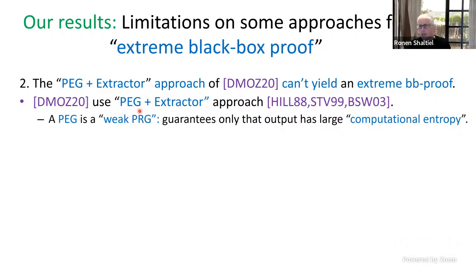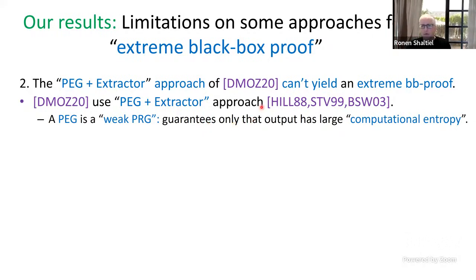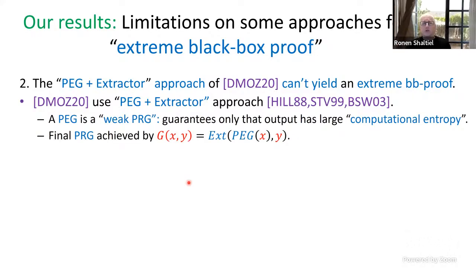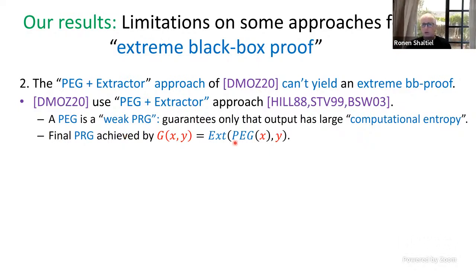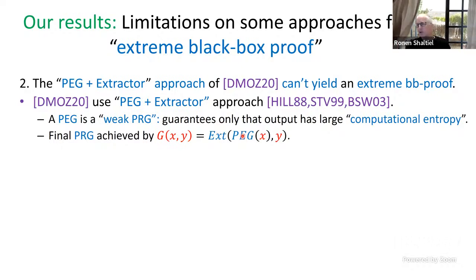A pseudo-entropy generator (PEG) is a weak form of pseudo-random generator — it only guarantees that the output distribution has large computational entropy. If you want to construct a PRG, the PEG plus extractor approach is to first use your hardness assumption to construct a pseudo-entropy generator, and then apply an extractor on the output to extract this computational entropy into a final pseudo-random generator G.